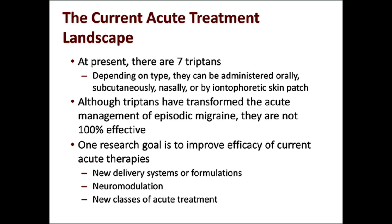At present, there are seven triptans available in the United States, and depending on which one is selected, they can be administered orally, subcutaneously, nasally, or by iontophoretic skin patch. Although triptans have transformed the acute management of episodic migraine, they are not 100% effective. One research goal is to improve efficacy of current acute treatments through new delivery systems or formulations, by neuromodulation devices which target the same areas in the brain, or by completely new classes of acute treatment.